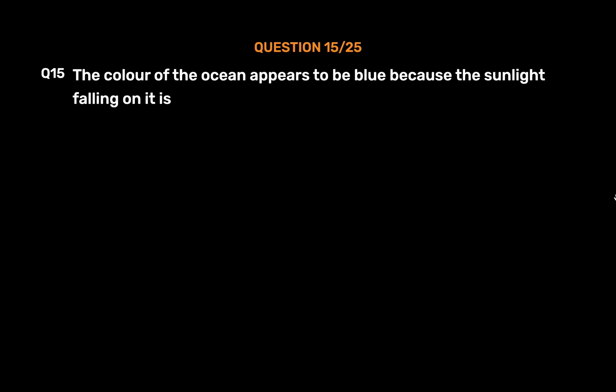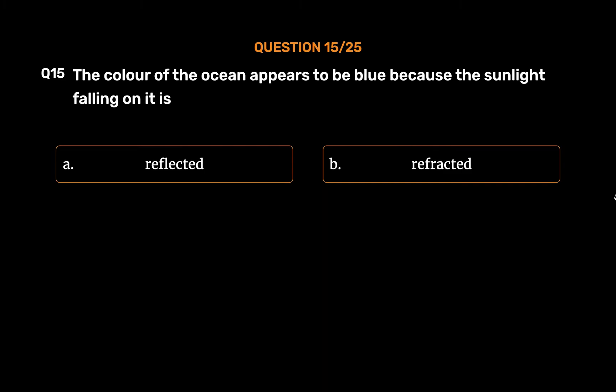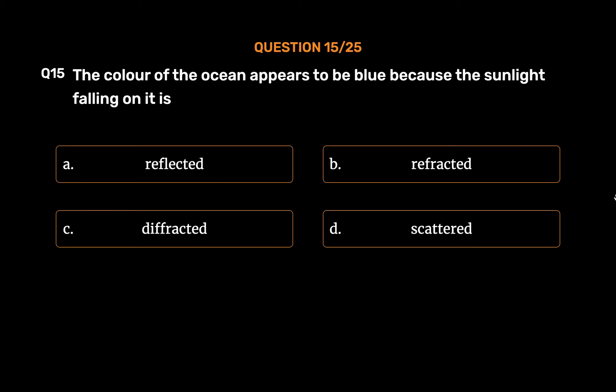Question No. 15. The color of the ocean appears to be blue because the sunlight falling on it is: Option A: Reflected. Option B: Refracted. Option C: Diffracted. Option D: Scattered.